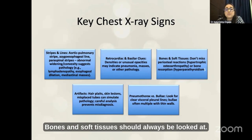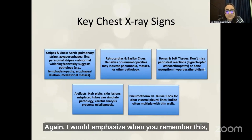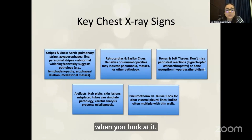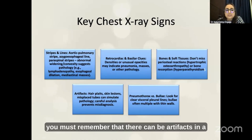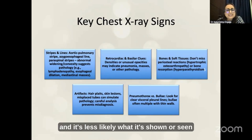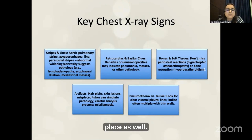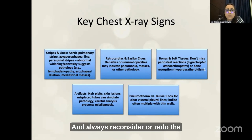Bones and soft tissues should always be looked at. Artifacts are very important — always remember that there can be artifacts in a setting where a patient does not have any clinical cues or presentation and what is seen on the X-ray may not represent actual pathology. Always have your clinical aspect in place and reconsider or redo the X-ray if really needed.